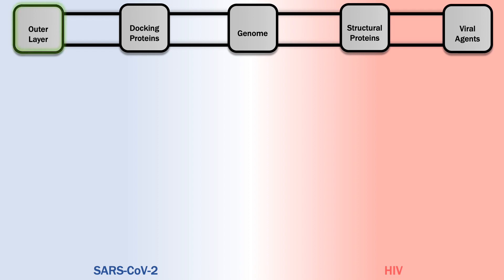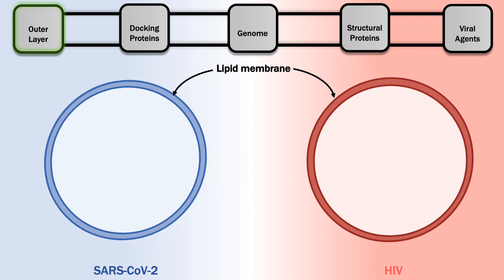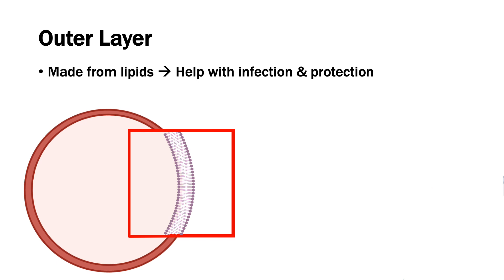The first thing we'll talk about is the outer layer of these viruses. Both of them have what's called a lipid membrane, and some structures will be common to both viruses like this one. The membrane is free flowing or fluid in a way, but despite this it offers protection to these viruses. The layer is made out of lipids, which are a type of molecule — fat molecules, for example, are a type of lipid. Each lipid looks like a little ball with two tails attached to it, and together these lipids make two separate layers that face opposite sides. This layer helps the virus in infecting cells while offering protection and stability.